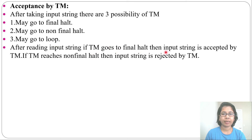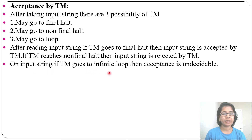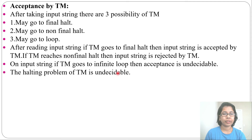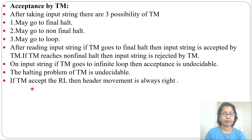If the Turing machine goes to a final halt after reading the input string, the input string is accepted. If it reaches a non-final halt, the input string is rejected. If the Turing machine goes into an infinite loop, then acceptance is undecidable. The halting problem of a Turing machine is undecidable because of this — when it goes into a loop you cannot determine whether it accepts or rejects, which is why it is undecidable.